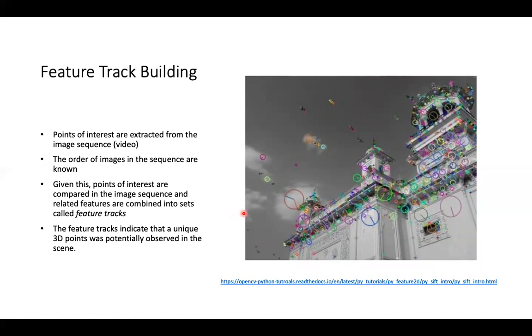So to generate these feature tracks, points of interest are extracted from the sequence of images, also known as the video. Knowing the order of the images in the image sequence, the paper says it's possible to extract these features and group them together into feature tracks that potentially identify a unique 3D point in the scene.